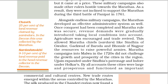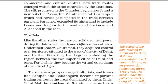Alongside endless military campaigns, the Marathas developed an effective administrative system as well. Once conquest had been completed and Maratha rule was secure, revenue demands were gradually introduced taking local conditions into account. Agriculture was encouraged and trade revived. This allowed Maratha chiefs — sardars — like Sindhia of Gwalior, Gaekwad of Baroda and Bhosle of Nagpur the resources to raise powerful armies. Maratha campaigns into Malwa in the 1720s did not challenge the growth and prosperity of the cities in the region. Ujjain expanded under Sindhia's patronage and Indore under Holkar's. By all accounts these cities were large and prosperous and functioned as important commercial and cultural centers. New trade routes emerged within the areas controlled by the Marathas. The silk produced in the Chanderi region now found a new outlet in Pune, the Maratha capital. Burhanpur, which had earlier participated in the trade between Agra and Surat, now expanded its hinterland to include Pune and Nagpur in the south and Lucknow and Allahabad in the east.